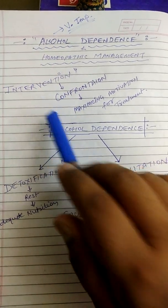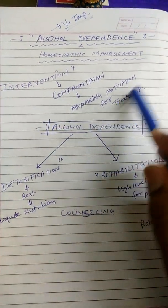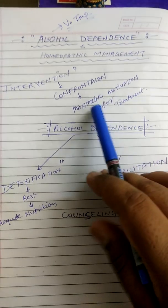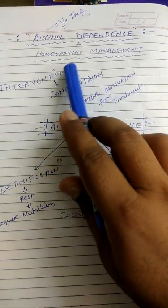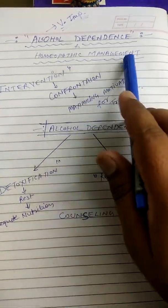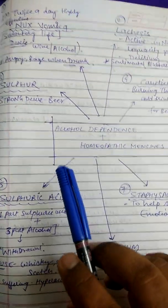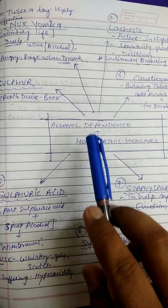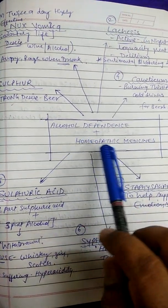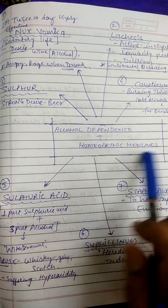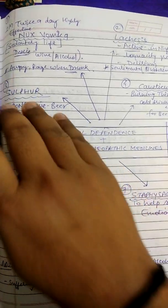Intervention mein, maximum motivation for treatment is required. Alcohol dependence mein homeopathy management kaisa kiya jata hai — yaha pe hum logon ne chart mein define kiya hua hai: how to manage alcohol dependence with homeopathy medicines.